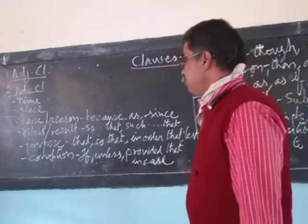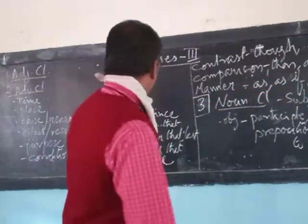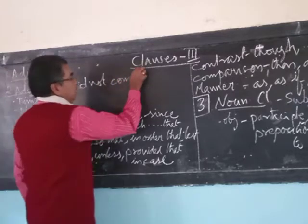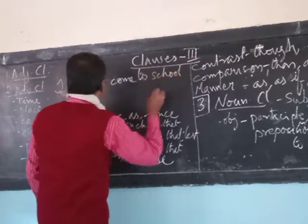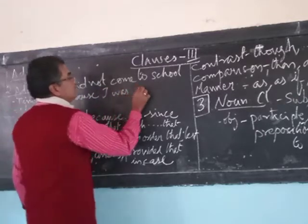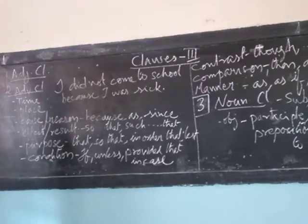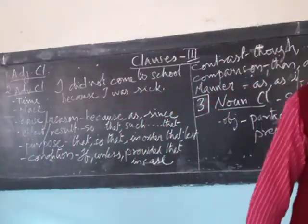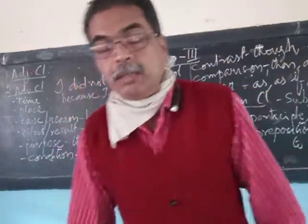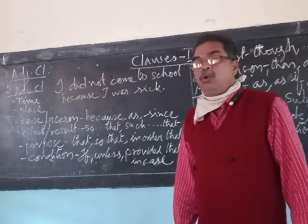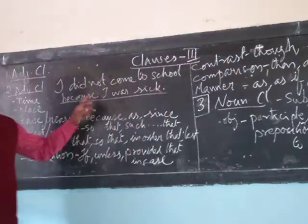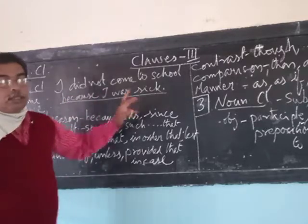The third adverb clause is related to cause or reason. For example: 'I did not come to school because I was sick.' The main clause is 'I did not come to school' — it tells us about an action that did not take place. The reason behind not coming to school — the cause — is 'because I was sick.' So 'because I was sick' is the adverb clause of reason.